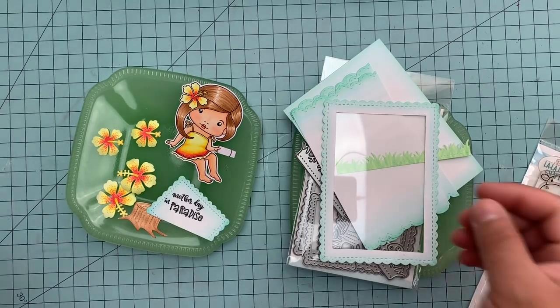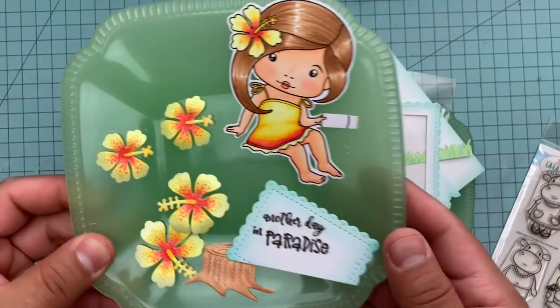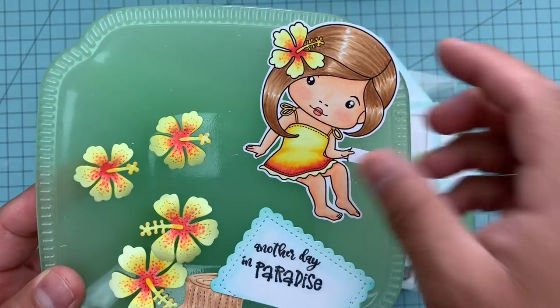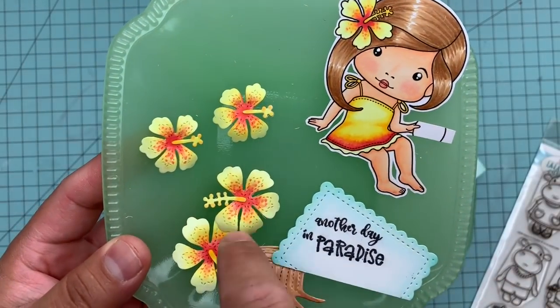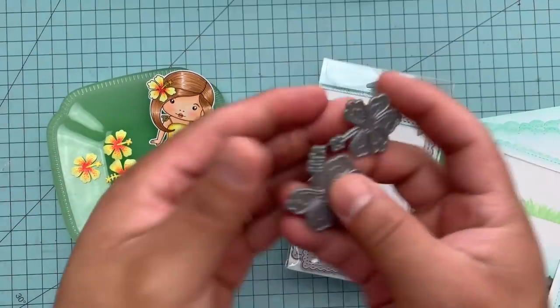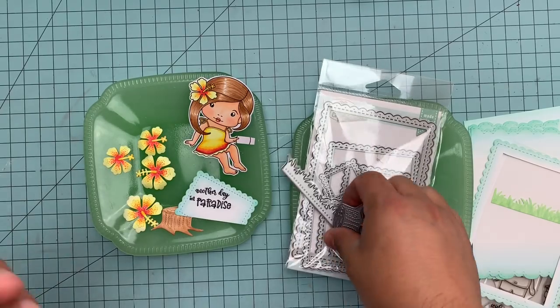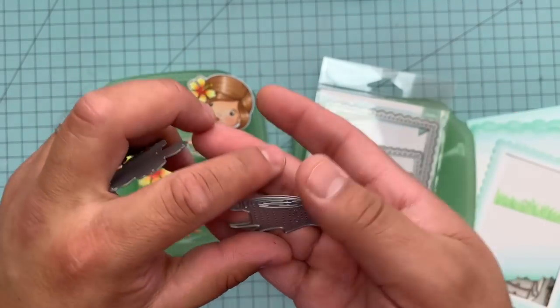I'm going to use Tropical Marci. We're going to use this gorgeous stamp which I've already colored in with my Copics. I've also used this hibiscus die. All of these items by the way are already in the La La Land Craft store.